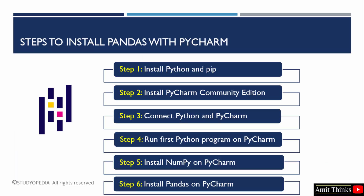These are the steps to install pandas with PyCharm. You need to remember that first you need to install numpy before installing pandas, because pandas is built on top of numpy. First, you need to install Python and pip. Pip is a package manager used to download, install, and manage Python packages and libraries. Then we will install the PyCharm community edition. After that, we will connect Python and PyCharm, run a first Python program, install numpy, and finally install pandas.